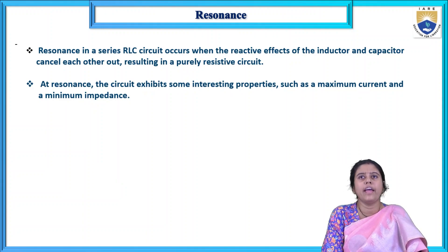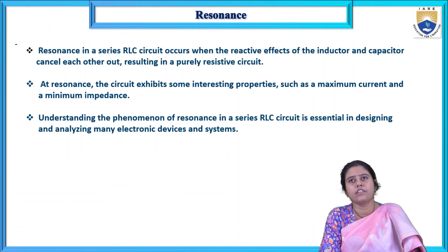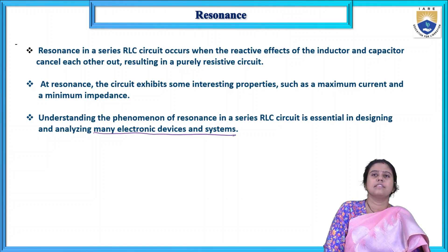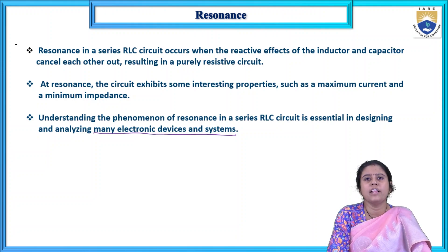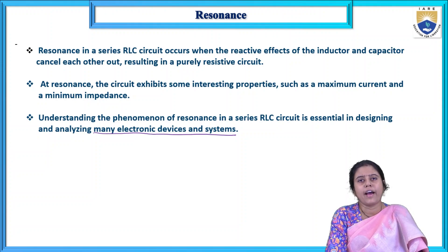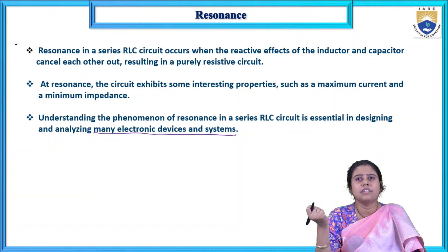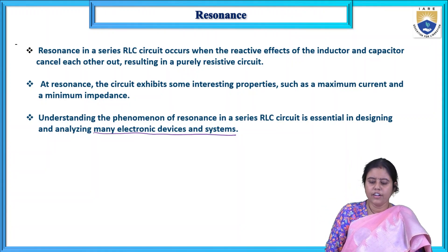At resonance, the circuit exhibits interesting properties such as maximum current and minimum impedance. Resonance is a very important phenomenon in electrical and electronics engineering. If the inductive and capacitive reactances become equal, current becomes maximum — and if suddenly in a circuit the current is maximum, it can burn the circuits and cause significant heat. So we must know the resonance point, and sometimes we need resonance in making certain equipment.